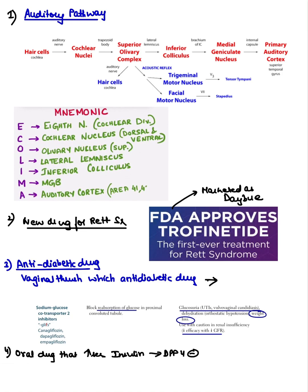We had two questions on the auditory pathway. The mnemonic is E. coli — that is CN8, then the cochlear nuclei, the olivary nucleus, the inferior colliculi, the lateral lemniscus, then inferior colliculi, then medial geniculate body, and the auditory cortex — that is area 41 and 42.